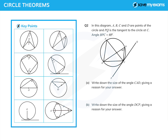Here's another diagram. A, B, C and D are points on the circle and PQ is the tangent to the circle at C. Write down the size of the angle CAD — that's that one there. I hope you can see this shape here which is the classic shape for angles in the same segment. So we can write down CAD equals CBD, which is 40 degrees. We must put our reason: angles in the same segment are equal.